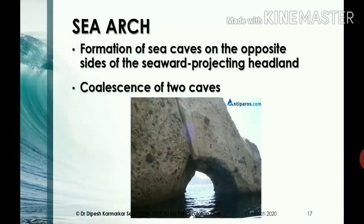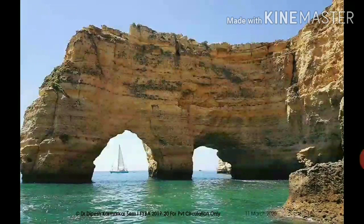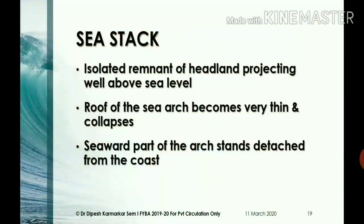The next landform is the sea arc, which is a further progression of sea caves. When sea caves are formed on opposite sides of a seaward-projecting headland, a natural arc is formed due to the collision of the two caves — this is called a sea arc, as you can see in this slide. Sea caves and sea arcs can be observed along the coast of Visakhapatnam in India, and along many other coasts.